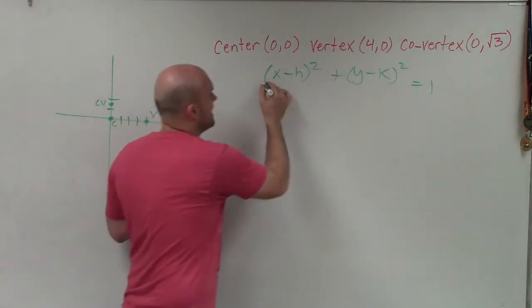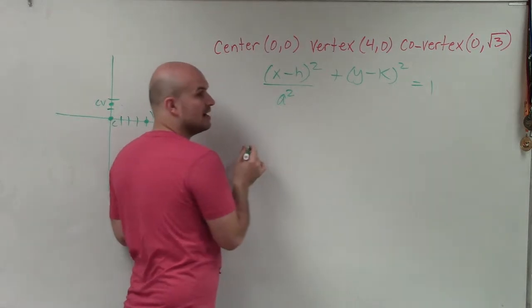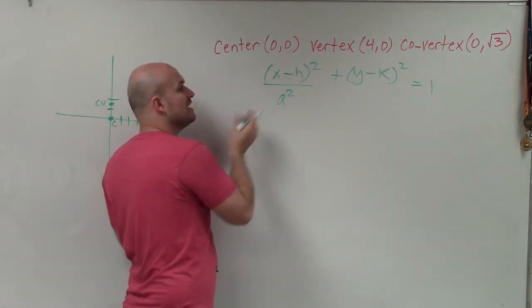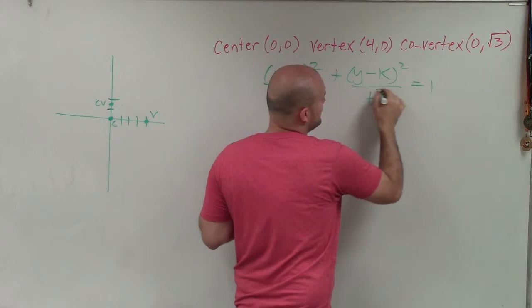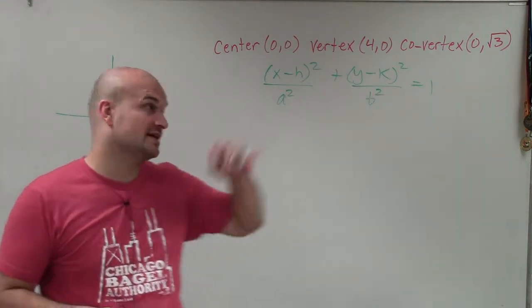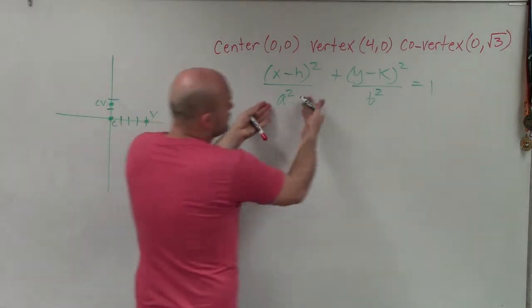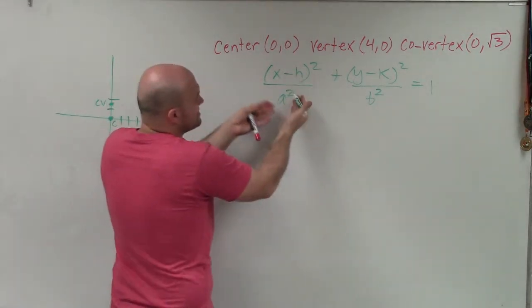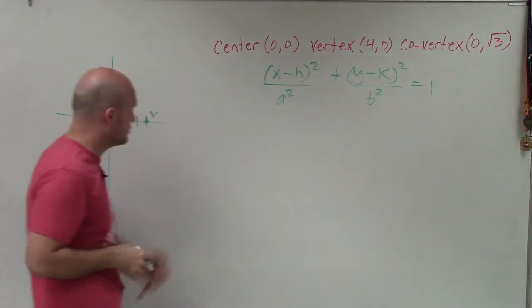Remember, when it's horizontal, my a², where a is the distance from the center to the vertex, goes under x. And b², where b is the distance from the center to the co-vertex, goes under y. The larger number goes under x if horizontal, or under y if vertical.